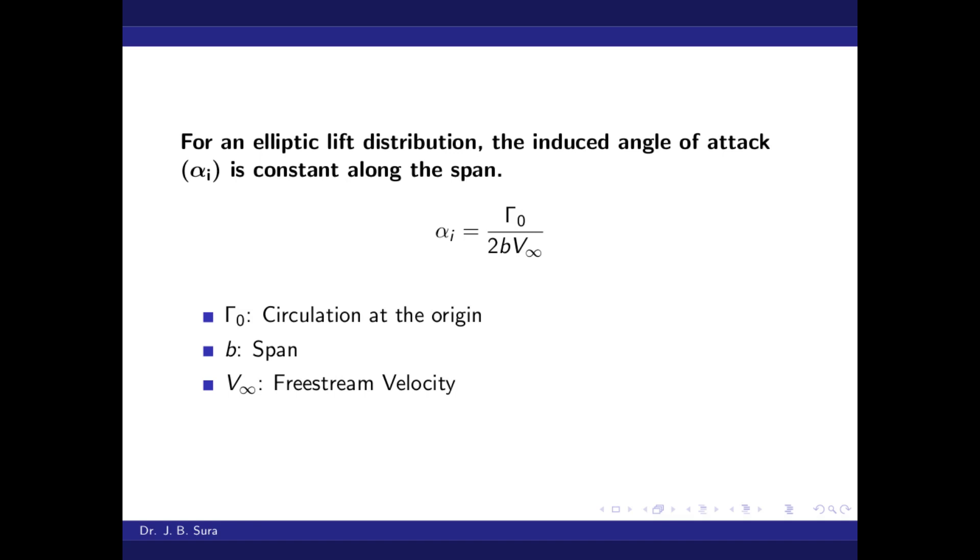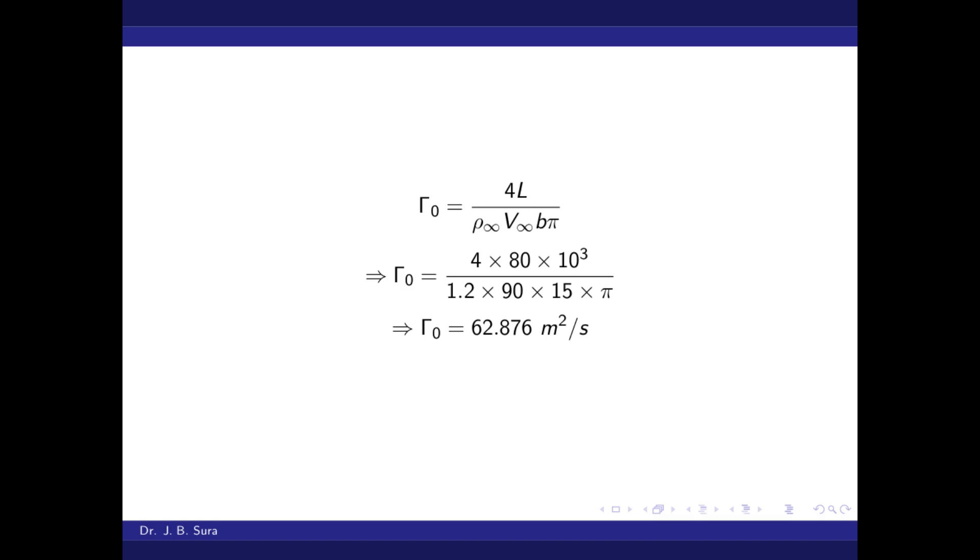Here we have all the information except circulation zero. So in order to find circulation zero, we can use this equation: Γ₀ equals 4L divided by ρ∞ V∞ b π.